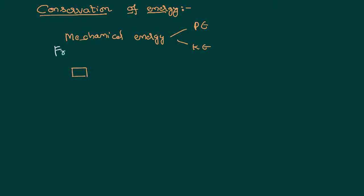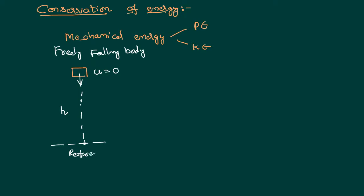Let us consider a freely falling body. A body is said to be a freely falling body if its initial velocity is equal to zero and it is dropped from a certain height from the ground. Let that height be equal to h. From the reference point, which is the surface of the earth, the body is at a certain height and therefore has potential energy equal to mgh.